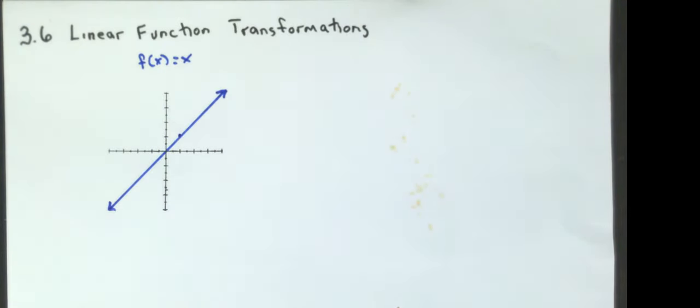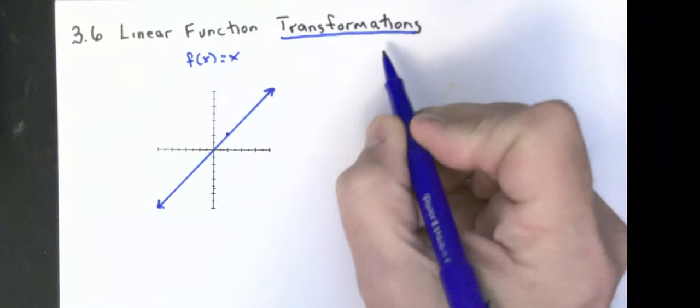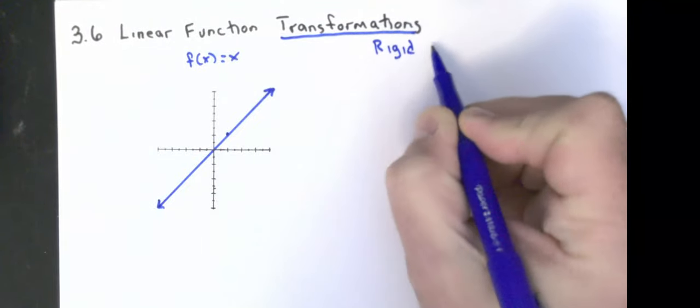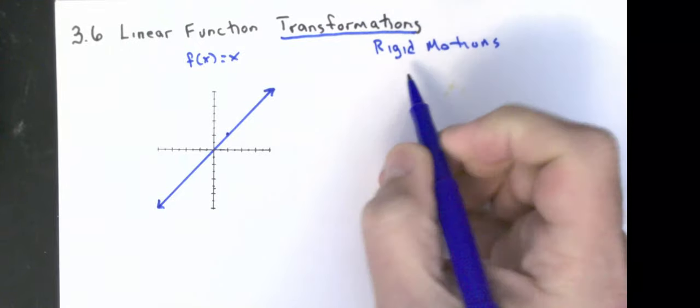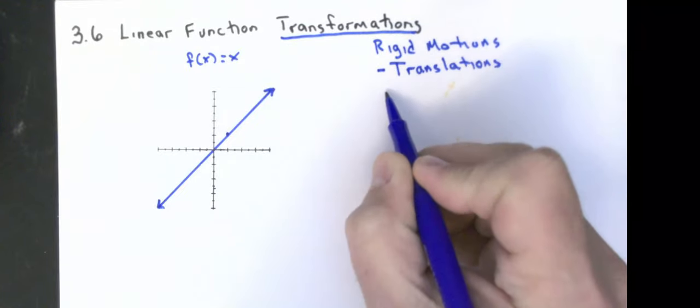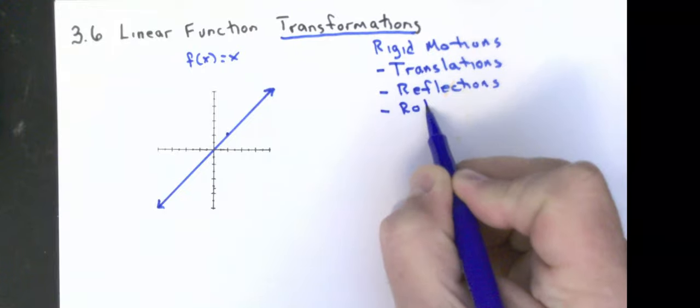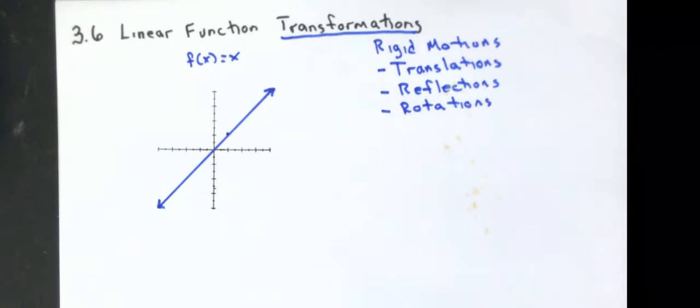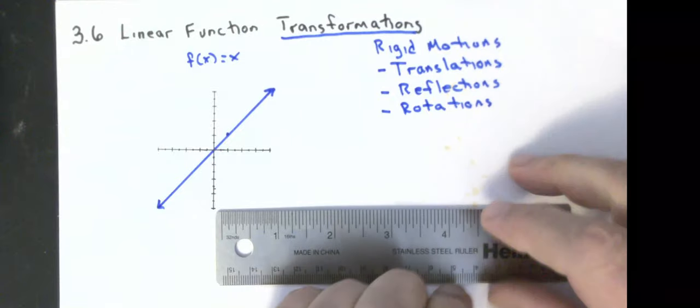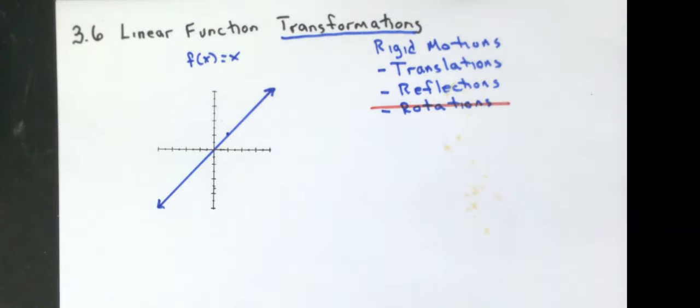We should remember from last year, transformations are things that keep things rigid motions. We had three things last year that were rigid motions. They were translations, reflections, and rotations. And until we get to the third year of high school math content, we really won't talk about rotations of functions. We will talk about translations and reflections.